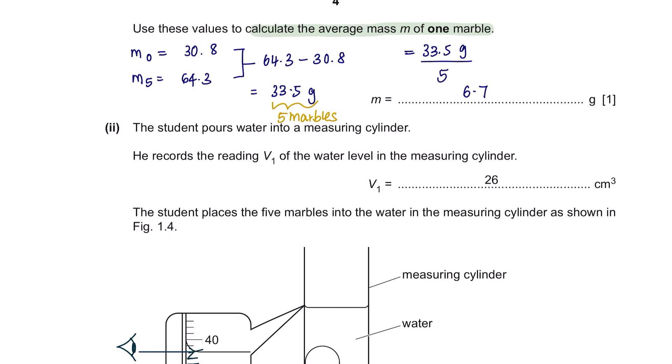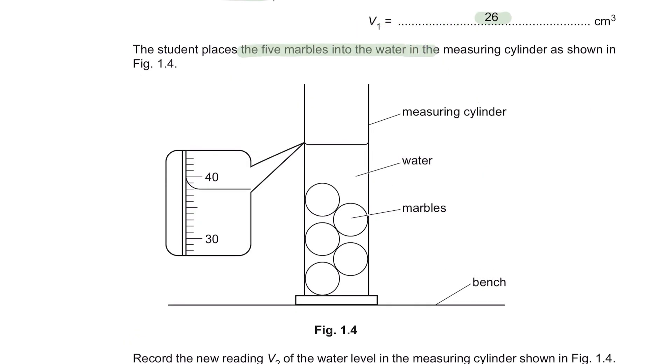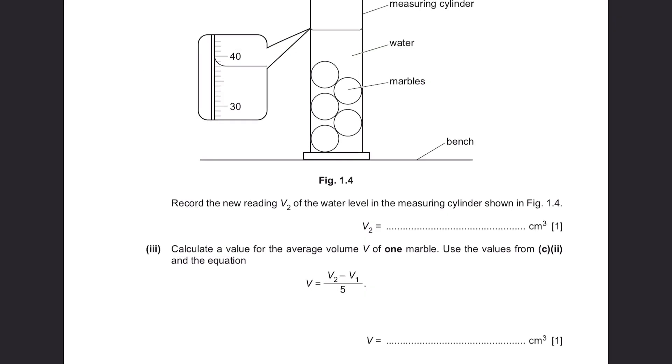Part 3. The student pours water into a measuring cylinder. He records the reading V1 of the water level in the measuring cylinder, 26 cm³. The student places the five marbles into the water in the measuring cylinder as shown in figure 1.4. Record the new reading V2 of the water level in the measuring cylinder. When taking reading of measuring cylinders, place your eyes at eye level to avoid parallax error and read the scale below the meniscus level. And this level here is at 38.